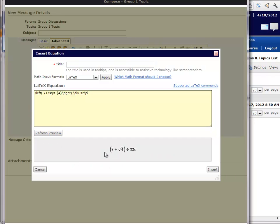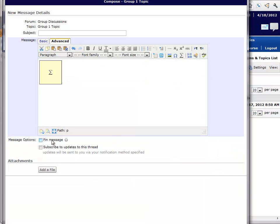and there's that beautiful equation. Now, for the title, I'm going to say something like 7 plus the root of 4 divided by 32 pi. And then I'm going to insert the equation, give it a title, post it.